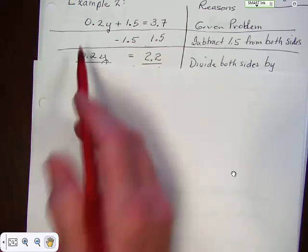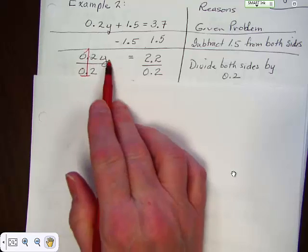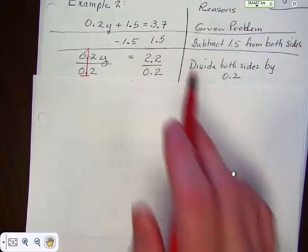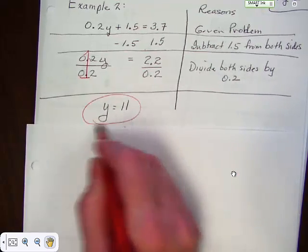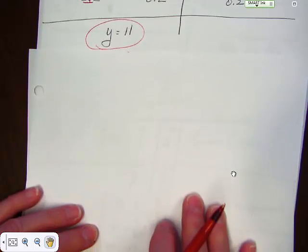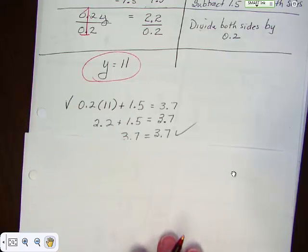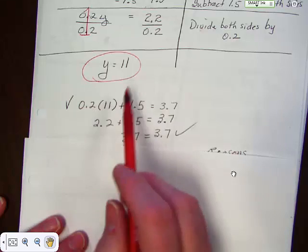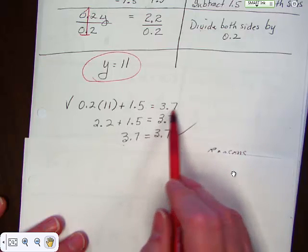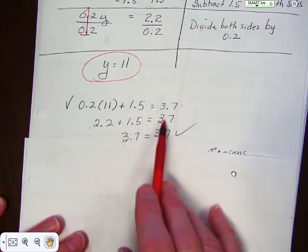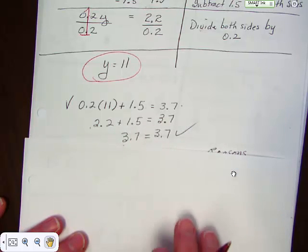Now you need to divide both sides by 0.2. That gives you that well-chosen one over here. And with 1y equals 2.2 divided by 0.2, when you get it done, y equals 11. But we're not happy with that — that's not good enough for us because now we have to check it. Let's substitute it in: 0.2 times 11 plus 1.5 equals 3.7. 2.2 plus 1.5 equals 3.7. 3.7 equals 3.7. Ta-da! It checks, so I know I'm right.